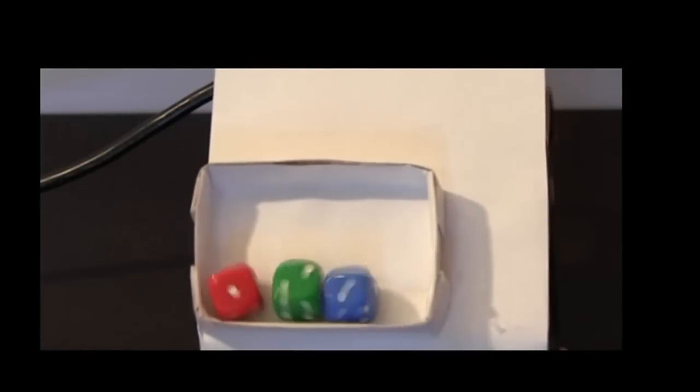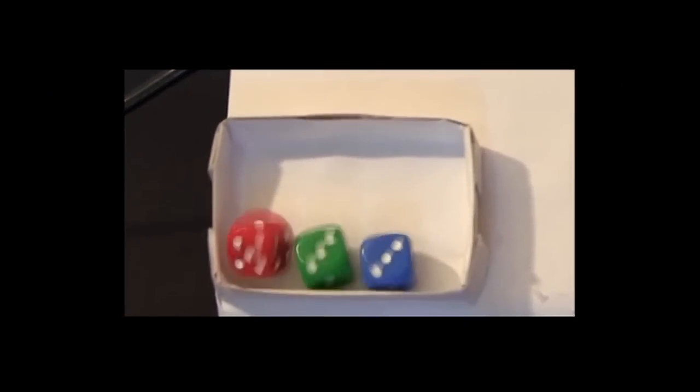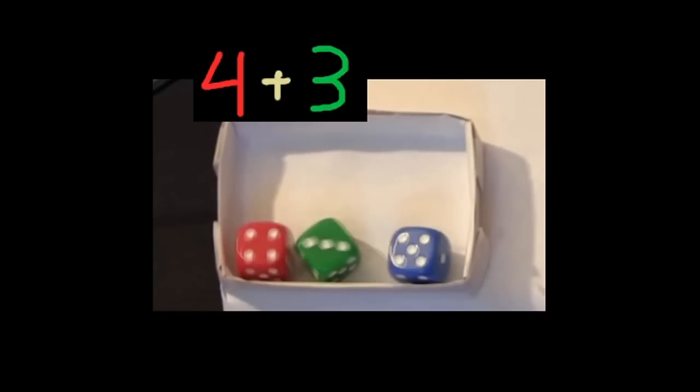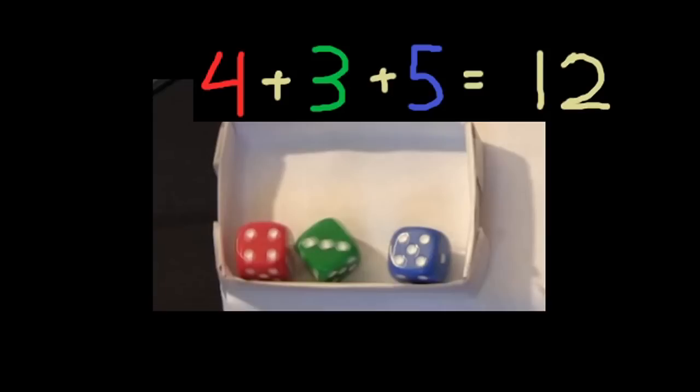But what do we mean exactly by disorder? Let's consider three dice being randomly shaken, and let's look at the sum of the numbers on the dice. For example, if we freeze it right now, the sum is 4 plus 3, 7, plus 5, 12. We will call that the state of the system and we'll use it to illustrate the notion of order.